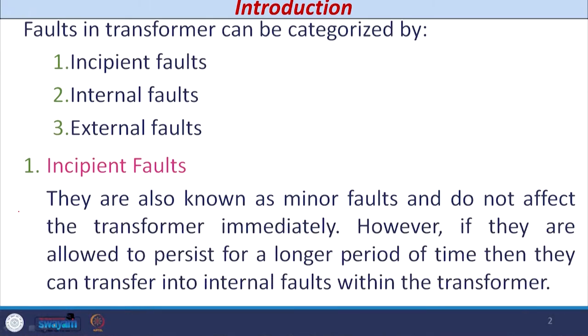Let us discuss the next lecture on transformer protection. Faults are inevitable when using a transformer as equipment, and there are different types that may occur. These faults are categorized into three types: first, incipient faults, also known as minor faults; second, internal faults or electrical faults which occur in the winding and core of the transformer; and third, external faults that occur outside the transformer and are not part of the transformer itself.